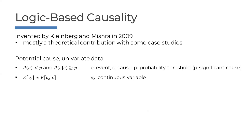We use logic-based causality, invented by Kleinberg and Misera in 2009. Their paper is mostly a theoretical contribution with some case studies, but there wasn't a true system to make it available for real-world application. In the univariate case, a potential cause exists when the probability of an event is less than P, but the probability of the event given the cause is greater than P. For the continuous case, we use expectations: the expectation of the continuous variable differs when the cause is present versus absent. The difference can be higher or lower — it just has to be different.